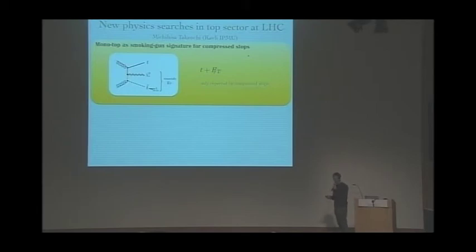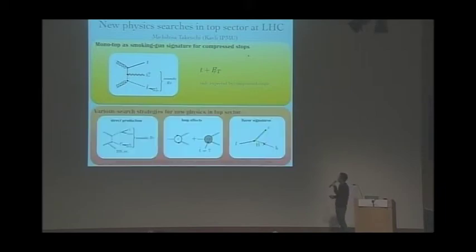Thanks to monojet searches, the compressed stop region is additionally covered. However, the monojet solution confronts another problem. In compressor spectrum, compressed gluinos and compressed squarks can also predict the same monojet signatures. Even though we observe monojet signatures, we cannot conclude they are from compressed stops. To solve this problem, we pointed out that monotop characteristic signature would be useful. Monotop is expected through this diagram for compressed stop cases. The important point is, unlike monojet signature, monotop is only expected by compressed stops. In my poster presentation, I will show the result on monotop signature. I also present the result on how to find new physics effect in top sector through loop effects and flavor signatures. Please come by my poster presentation.